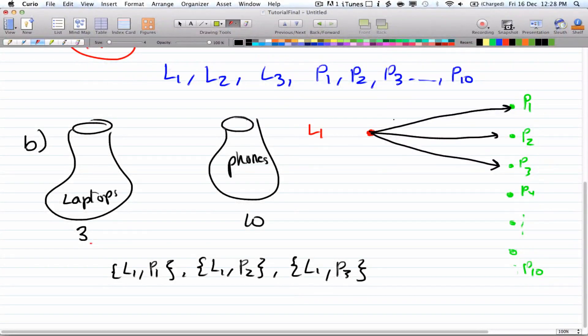And if we keep on doing this, what we're gonna have is the number in bag one times the number in bag two, and that's gonna give us three times ten ways. So thirty ways of choosing a pair of a laptop and a phone.